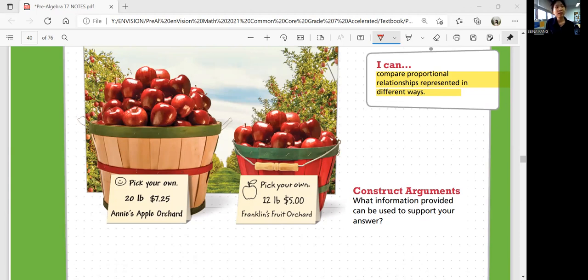So apples at Annie's will be $7.25 per 20 pounds. What would that be? How much would it be per pound? Is the unit rate. So if you divide 7.25 by 20, you should get 0.36 per pound.